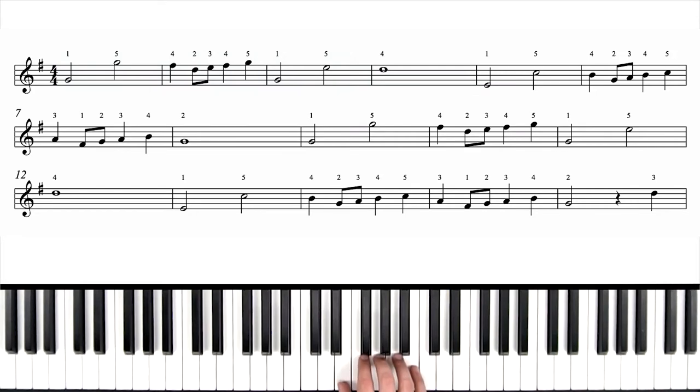Now, our thumb's going to jump down even further to an E, and then 4 on D. And then pinky's on C. Now, 4 on B, G, A, B, C. Next line down, 3 on A, 1 on F sharp, 2 on G, A, B, G. Okay, now we're done with the first half.